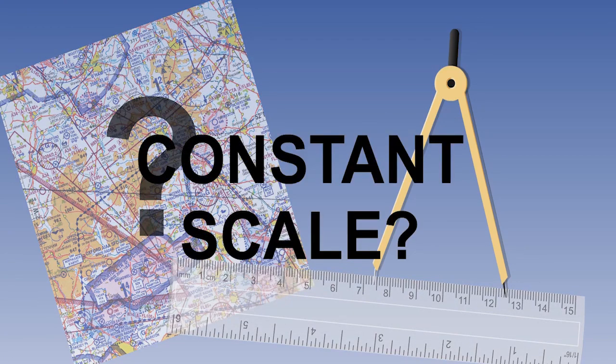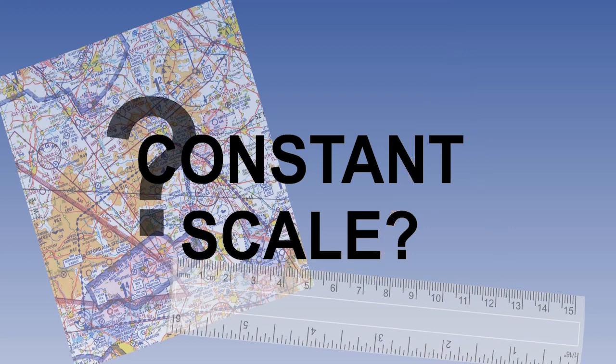It is a loose term, but generally, if the scale is within 1% of the correct scale, we regard it as constant. It means that you can use a ruler to measure distances. There is no requirement for dividers.